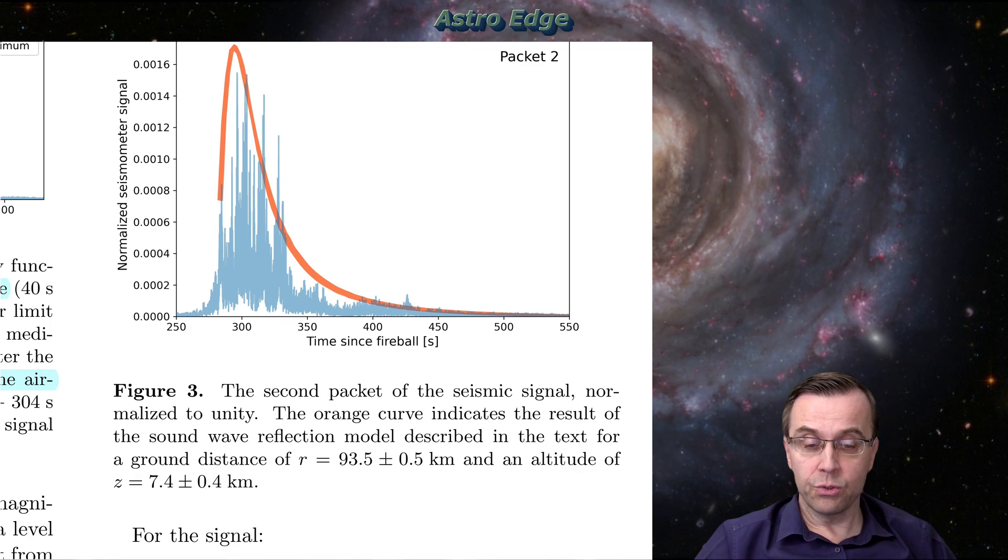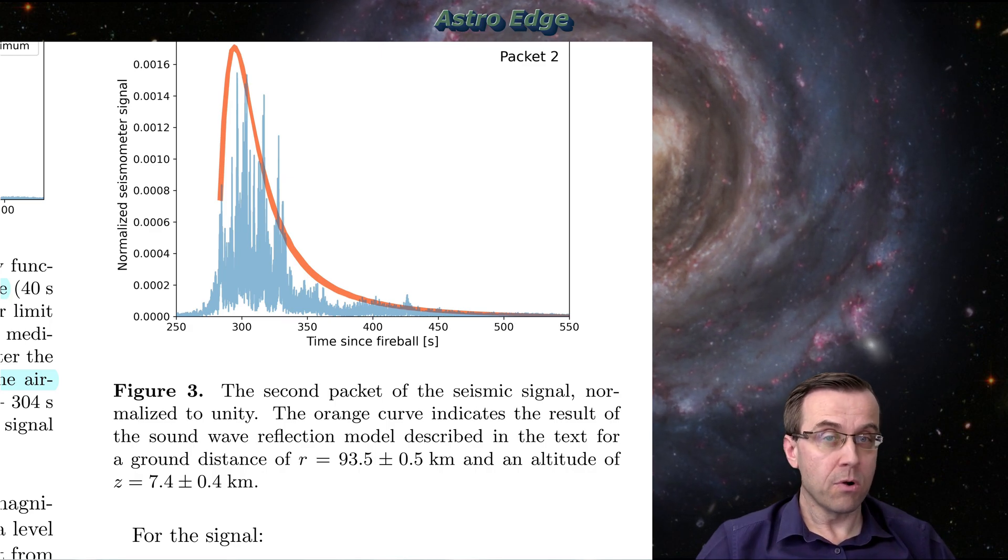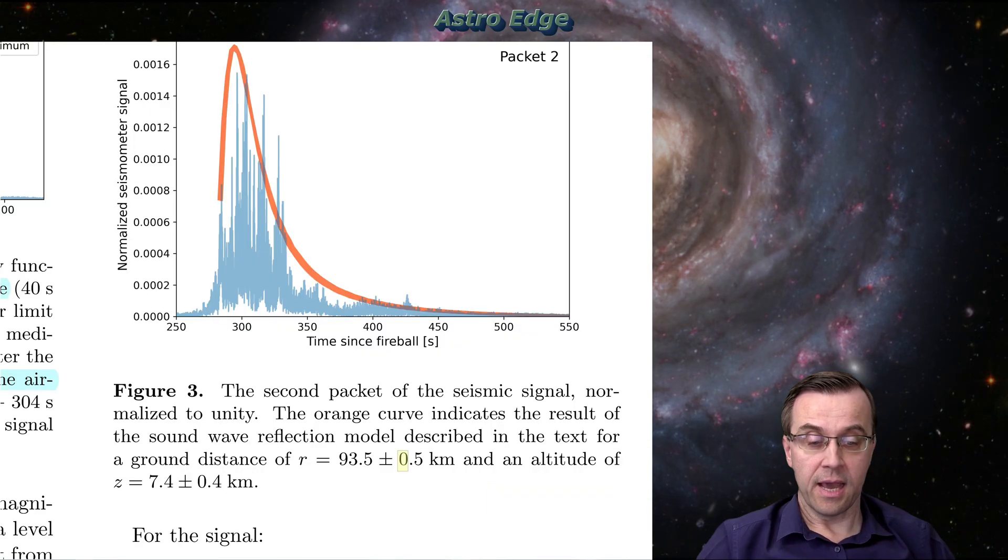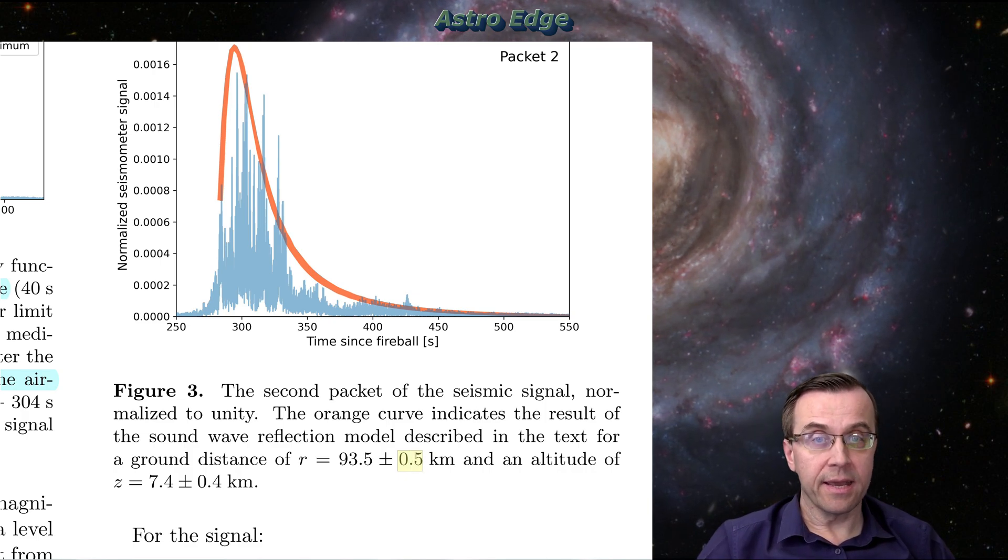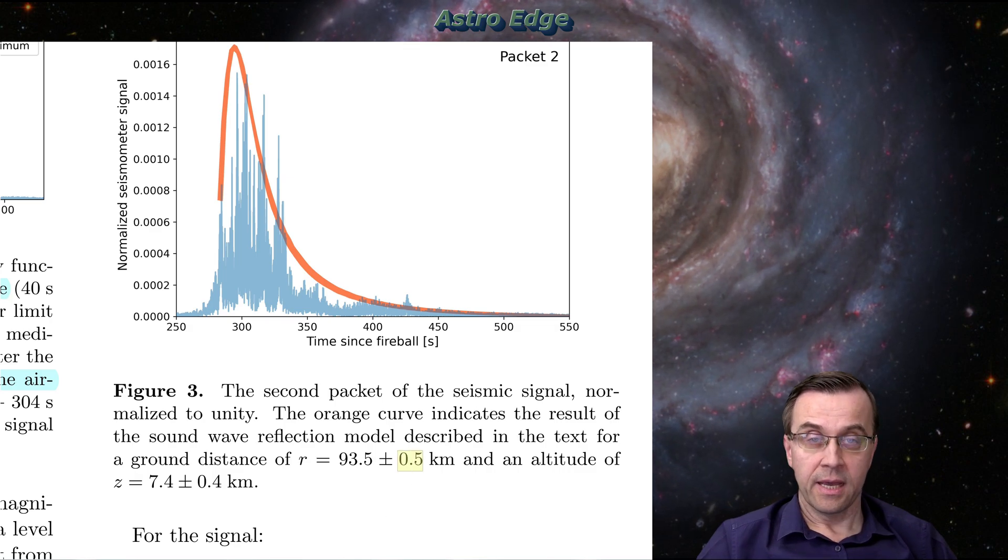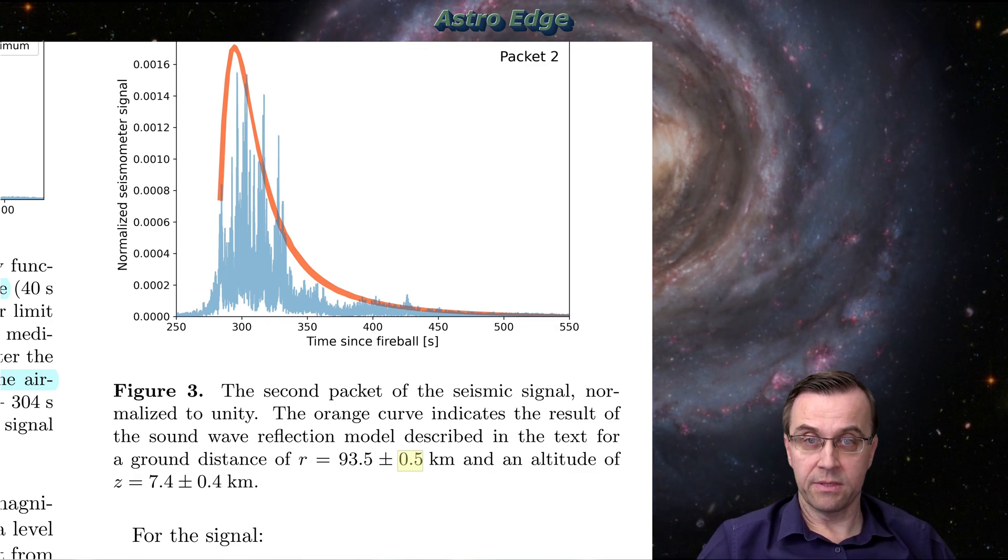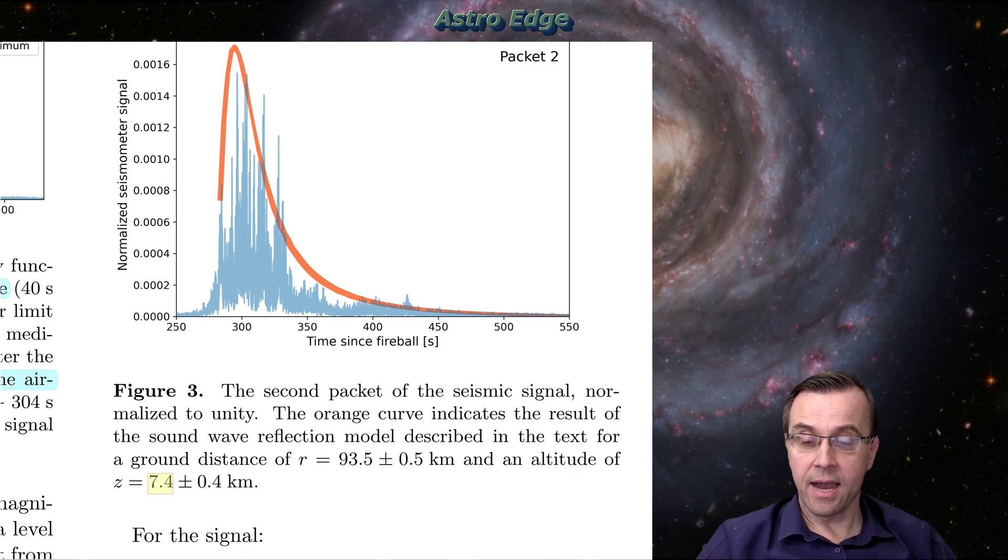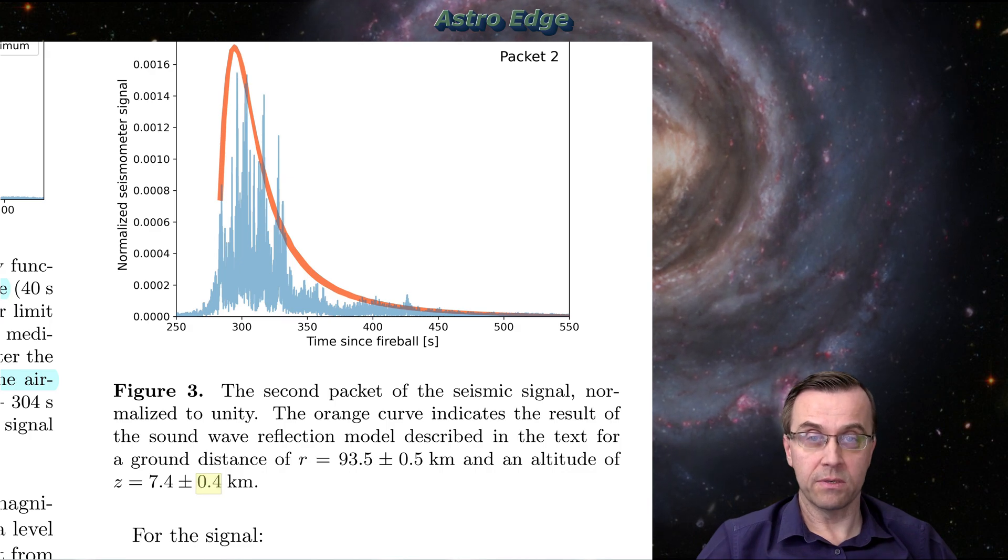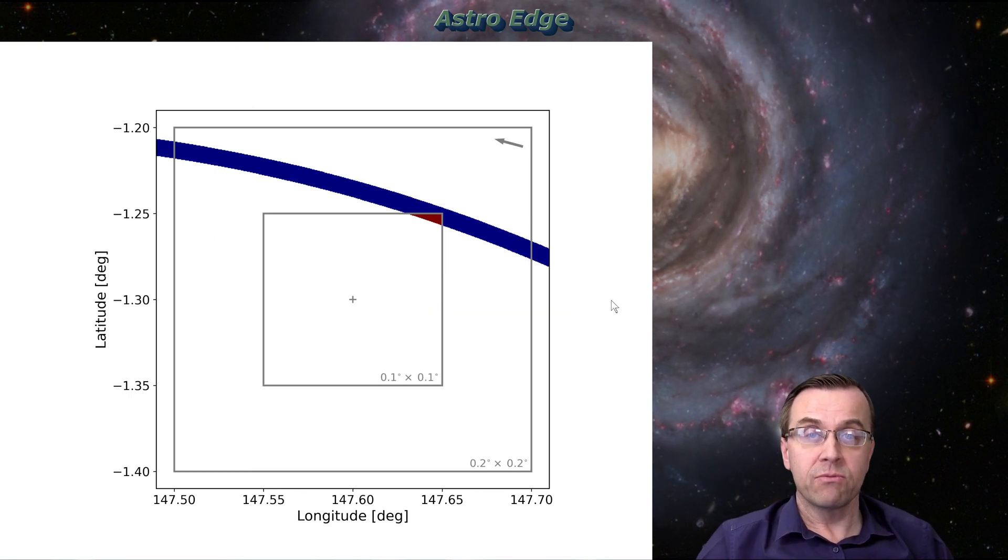One is the ground distance from the explosion, which is 93.5 kilometers. As you can see, they measured it with very high accuracy. This is critical for this research with the accuracy of one half kilometer. Another very important parameter they measured was the height. At what height the explosion took place over the ocean surface. It is 7.4 kilometers and again with very high accuracy, 0.4 kilometers. So here's the main result of this paper.